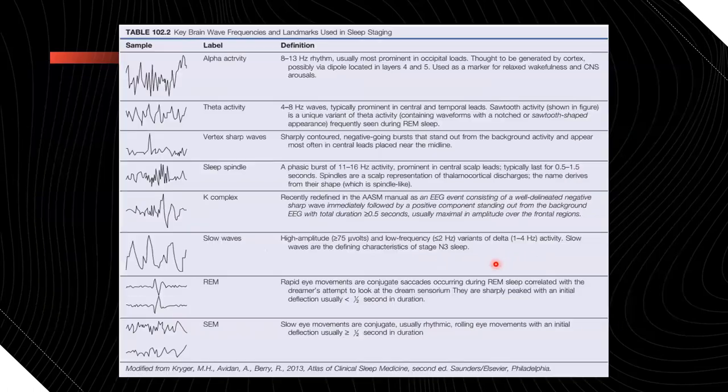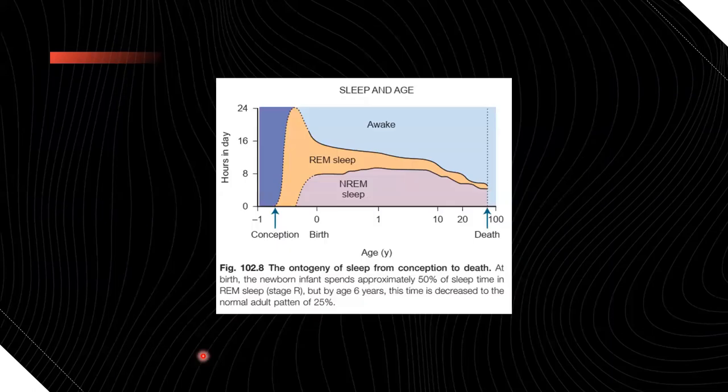How does the sleep EEG look like? Whenever we do ECG, ECG is for heart - electrocardiogram. When we do it for brain, it is called electroencephalogram. If somebody would have undergone it, they would be knowing that multiple electrodes are put and then we take the reading. There are many waves - alpha, theta, vertex sharp waves, sleep spindles, K-complex, slow waves, REM and SEM and all these things. I don't want to go into the details. Just for your curiosity, you can go through it later.